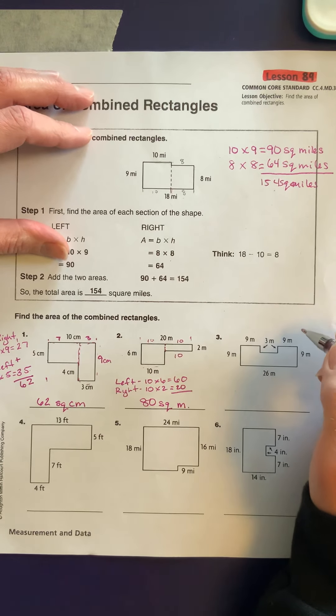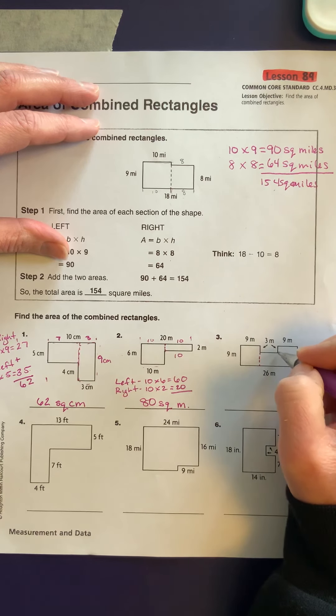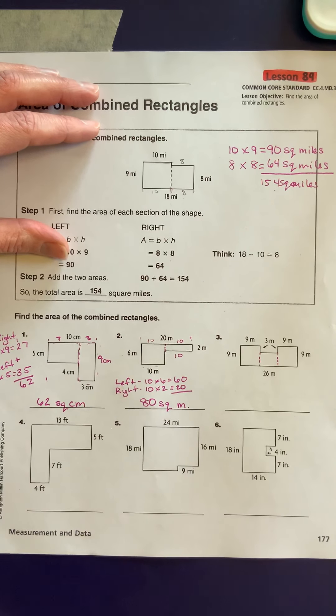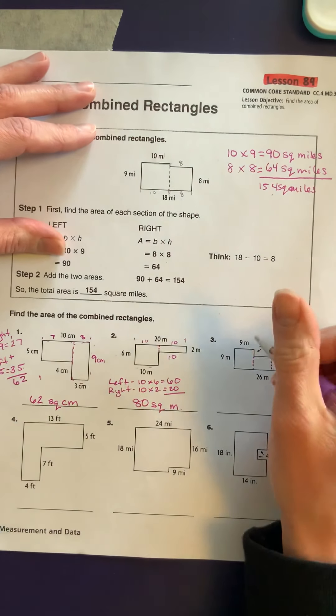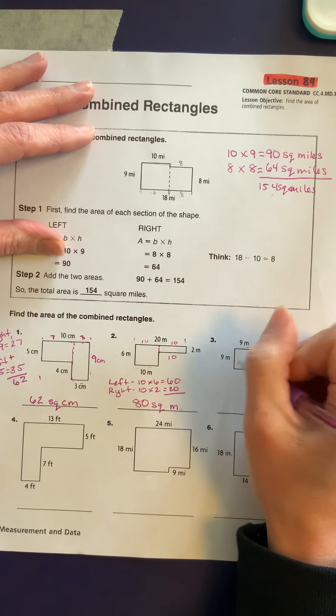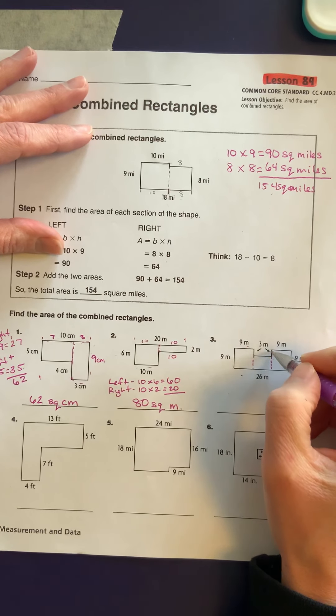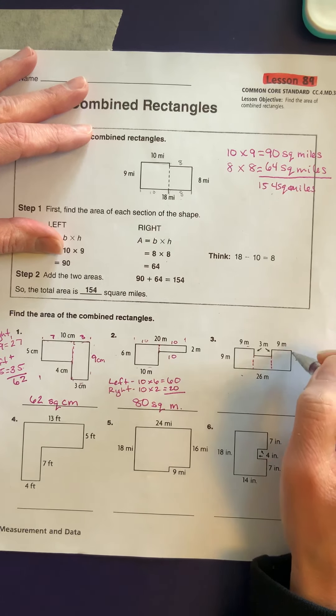Now for the next one, we're actually going to break this into 3. Now do you think that was the right move? Let's see. If I've got 9 meters here and 9 meters here, this is the same as that. This is 3 meters, and this is 3 meters for a total of 9.